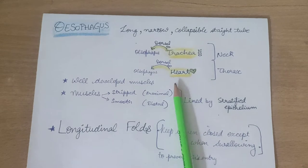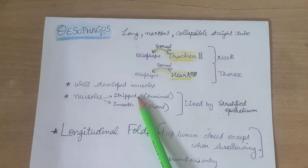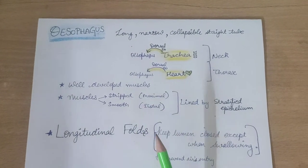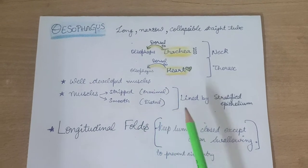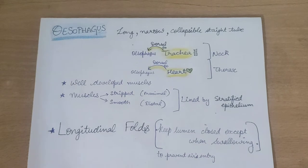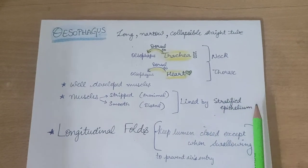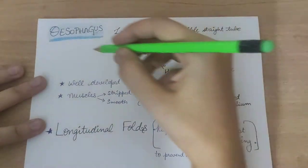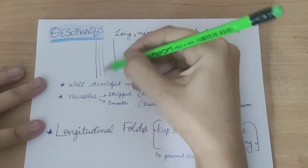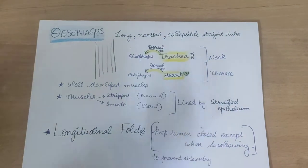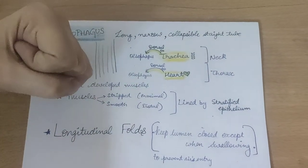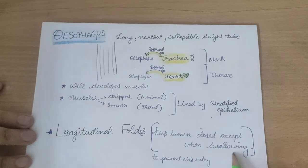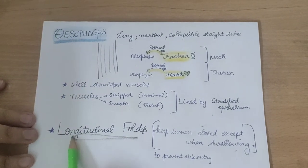Both types of muscles in the esophagus are covered by a stratified epithelium. Overall, the esophagus has longitudinal folds in its center. Due to these longitudinal folds it can constrict, regulating its opening to prevent air from being swallowed along with food during swallowing.